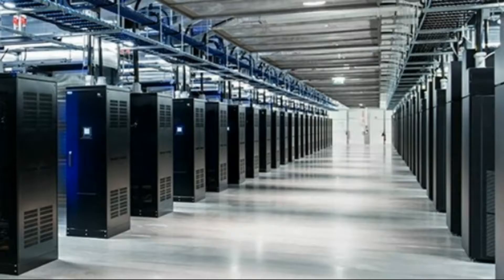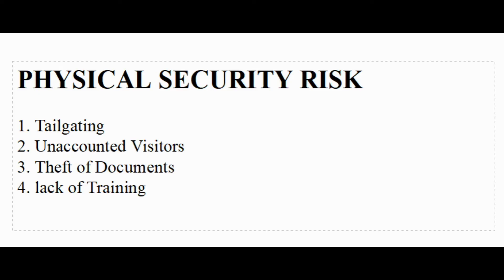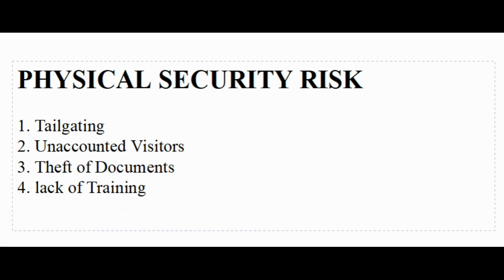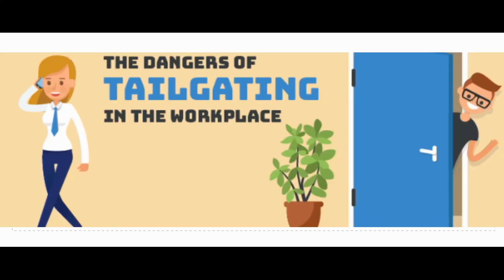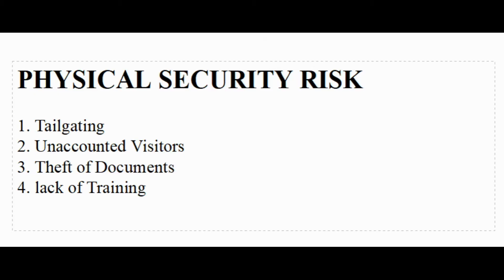Lastly, Area Three can be a data center, hub room, camera monitoring room, AHU (air handling unit), UPS room, or anything similar. These rooms are accessed only by a subject matter expert, not by anybody else. The common risks associated with physical security are: tailgating, unaccounted visitors, and theft of documents — especially if the project bay handles very sensitive or confidential data. Such physical security violations can occur due to lack of training or awareness given to employees.